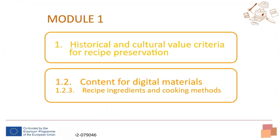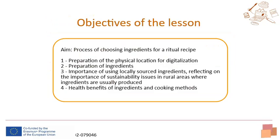Module 1: historical and cultural value criteria for recipe preservation. Content for digital materials covers recipe ingredients and cooking methods. The aim of this presentation is to understand how to choose ingredients for a ritual recipe, starting with the preparation of the physical location for digitalization, the preparation of ingredients, the importance of using locally sourced ingredients, and reflecting on sustainable issues in rural areas where ingredients are produced.